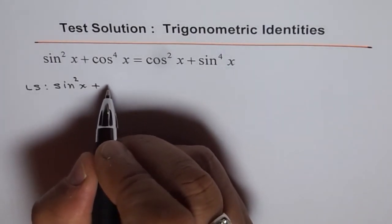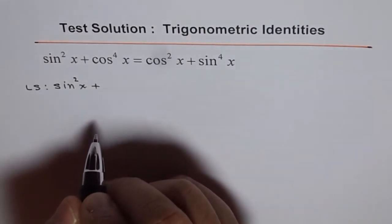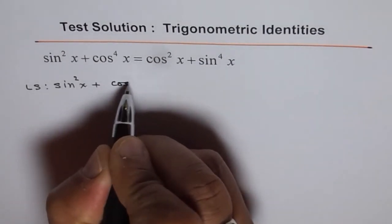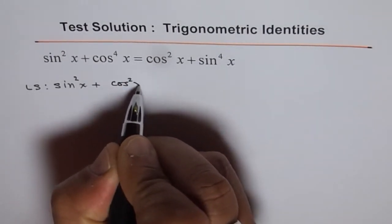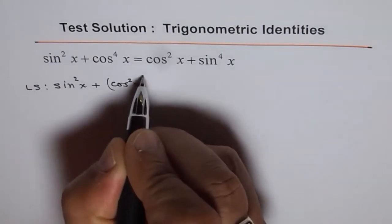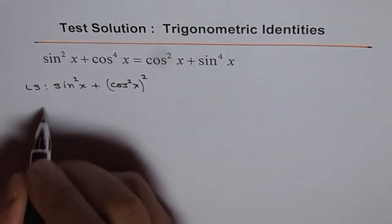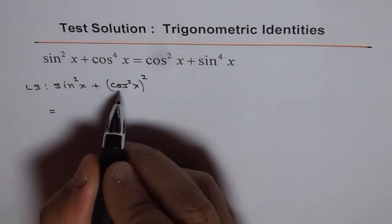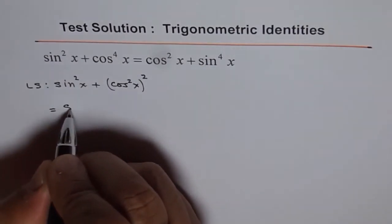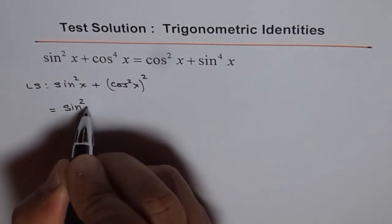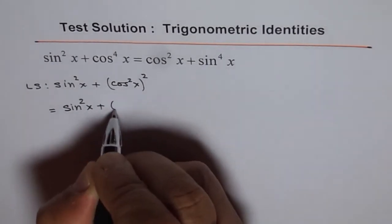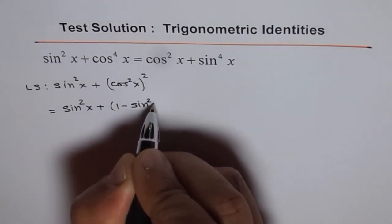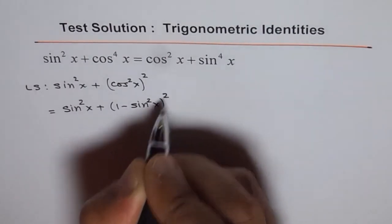We can write cos to the power of 4x as cos squared x, whole square. Then we write cos squared x as 1 minus sine squared x. So we have this as sine squared x plus 1 minus sine squared x, whole square.